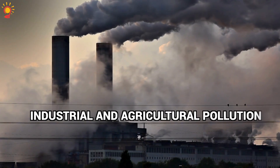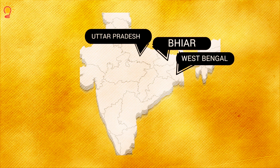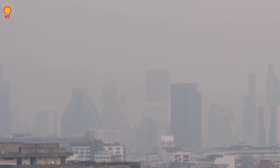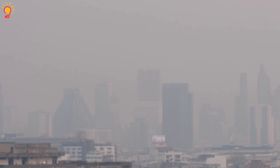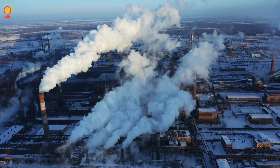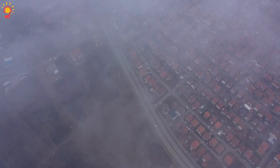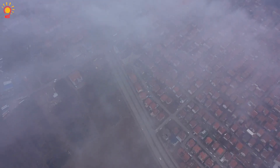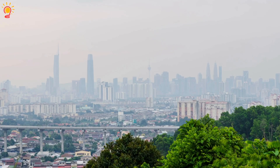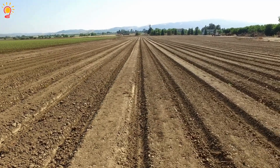Industrial and Agricultural Pollution: Brick kilns found in Uttar Pradesh, Bihar, and West Bengal emit large amounts of dust into the atmosphere. Coal-fired power plants and cement factories release fine particulate matter, adding to the dust burden. Stubble burning in Punjab and Haryana not only creates smoke but also disturbs soil, increasing dust in the region.